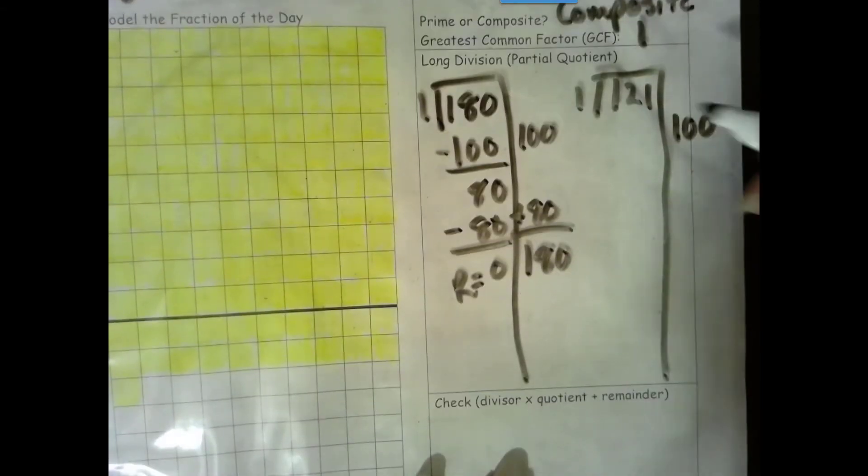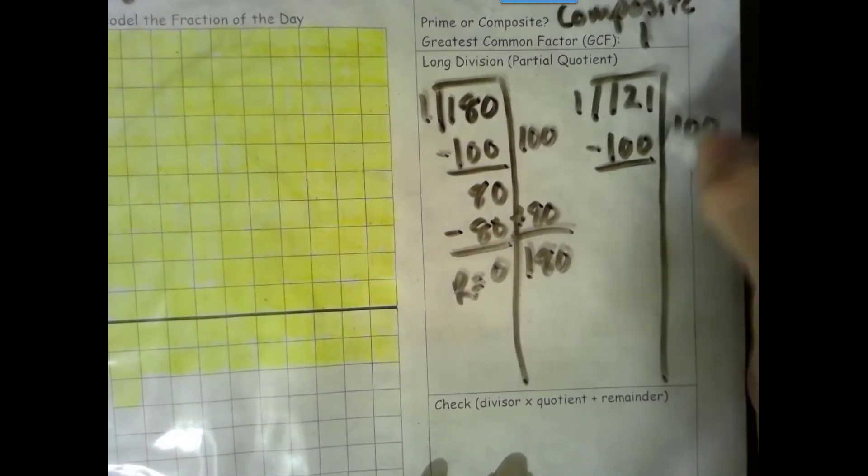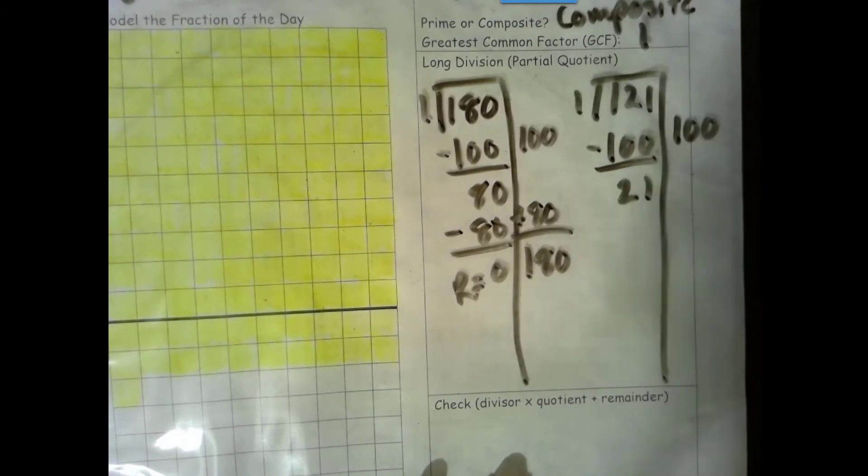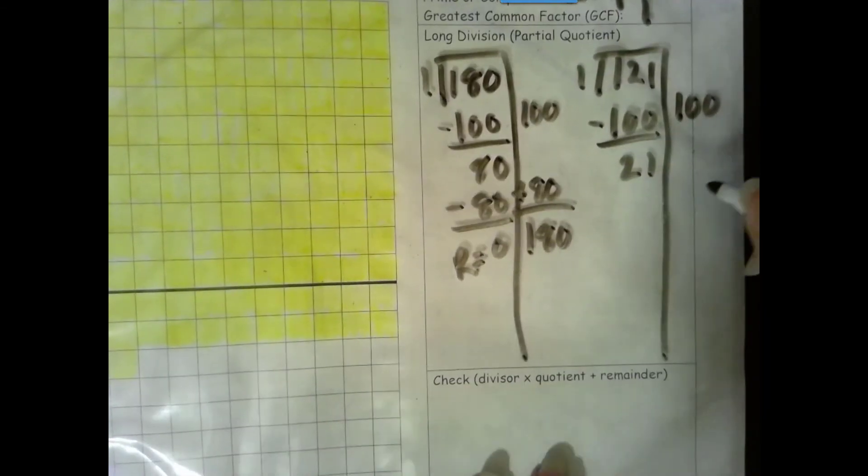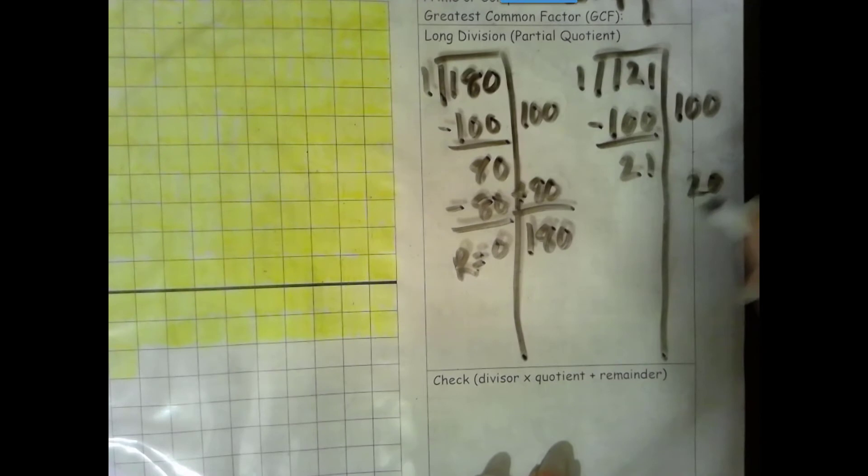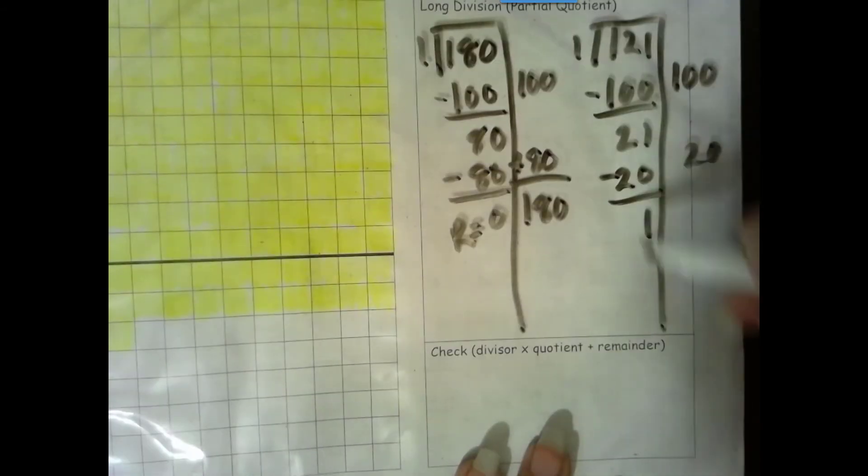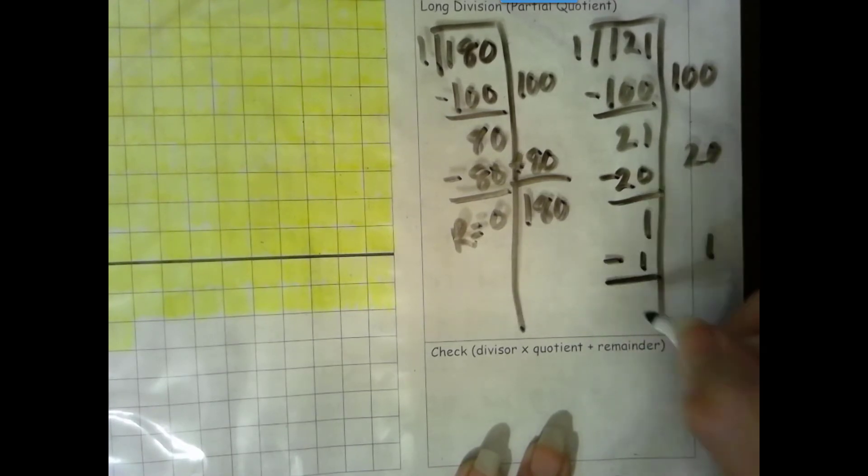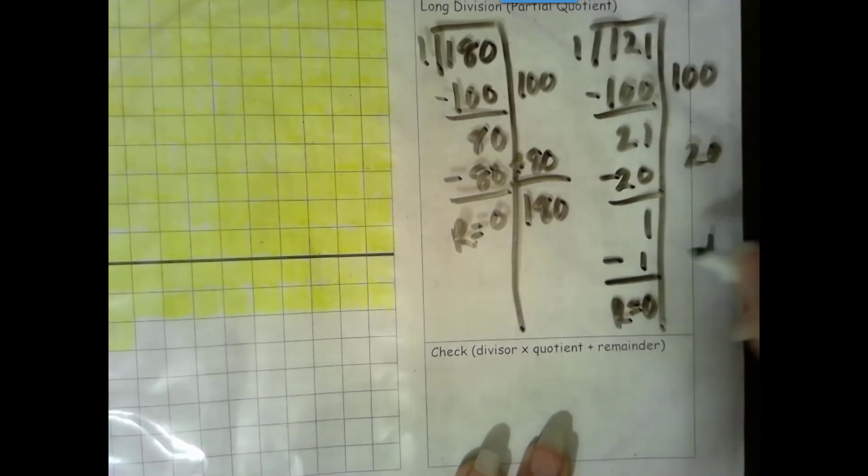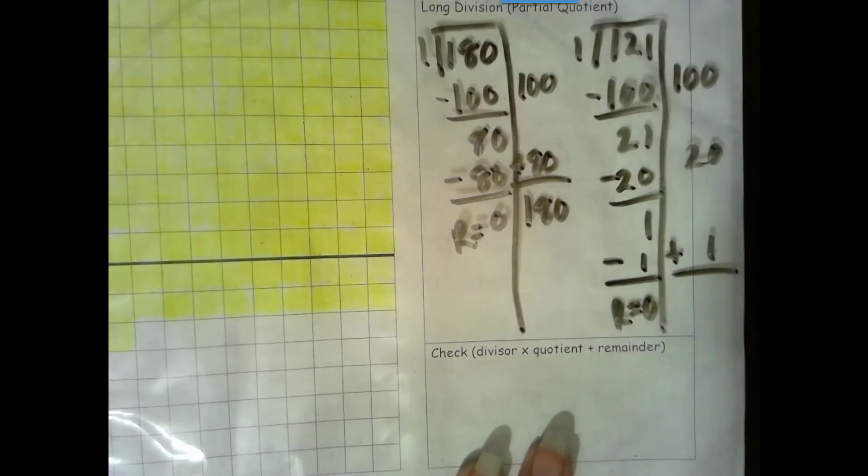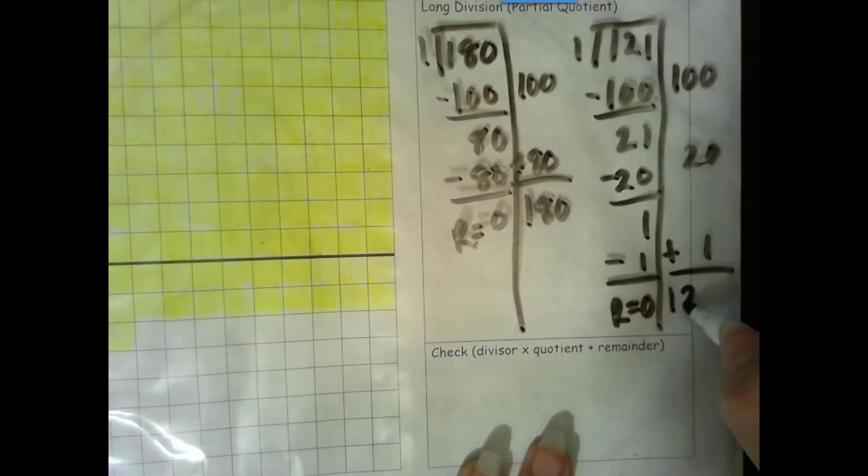100 times 1 is 100. More on top. No need to stop. 20 times 1 is 20. More on top. No need to stop. Number is the same. Zero is the game. 1 times 1 is 1. Number is the same. Zero is the game. Add our partial quotients together. I get 121.